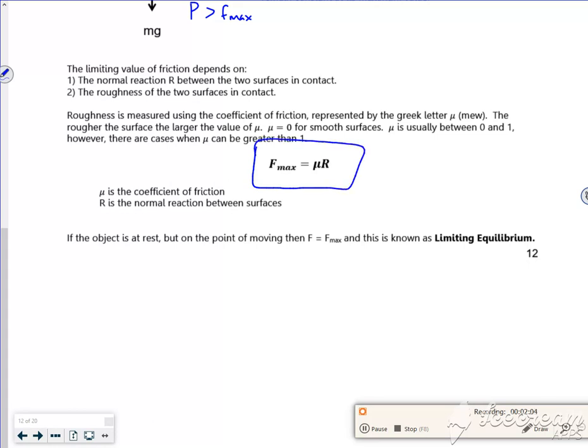is mu, the coefficient of friction, times by the normal reaction. How much force is pushing down on the surface.